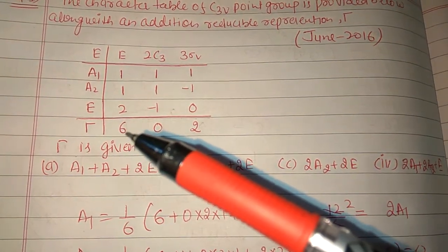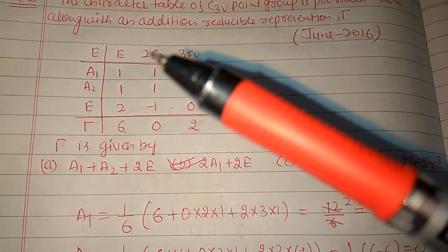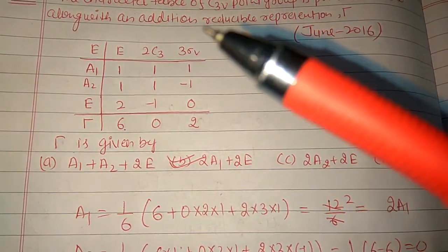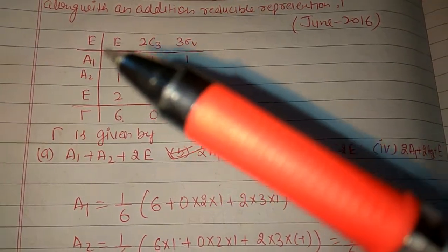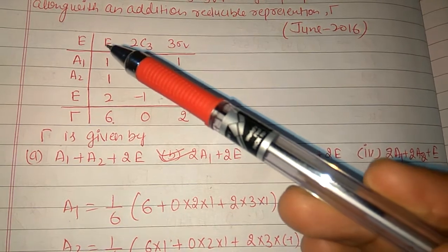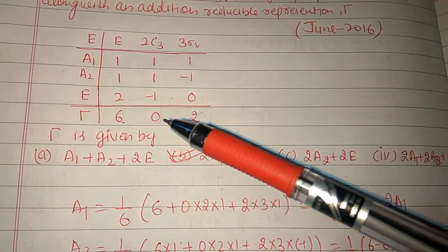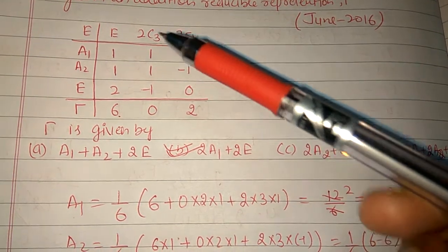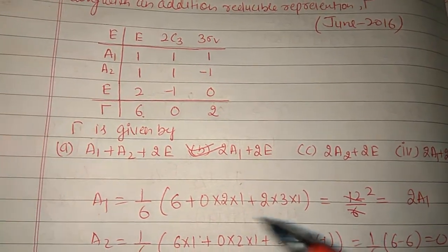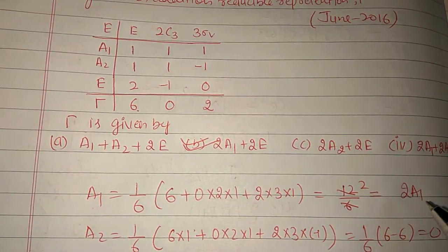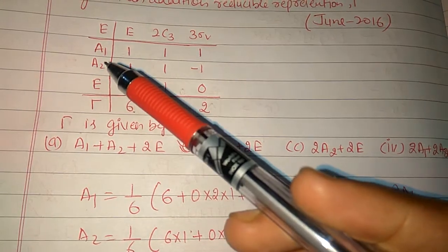To find the contribution of A1, we multiply: 6 with 1, then 0 with 2 and 1, then 2 with 3 and 1. So we get 1/6 times (6×1 + 0×1×2 + 2×1×3), which gives 12/6 — that is 2, so we get twice A1.